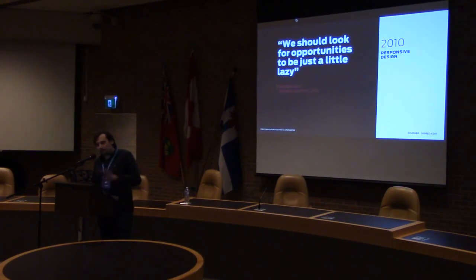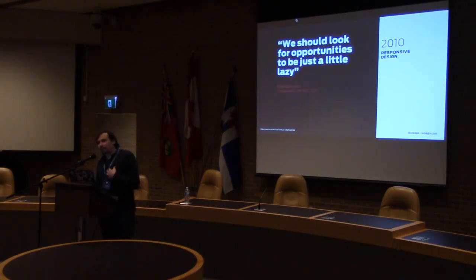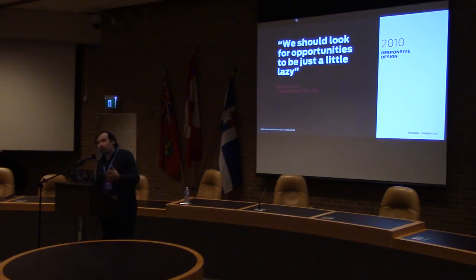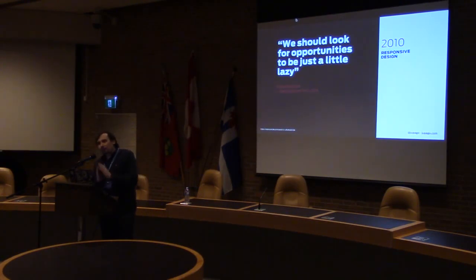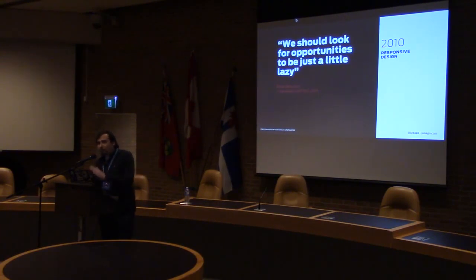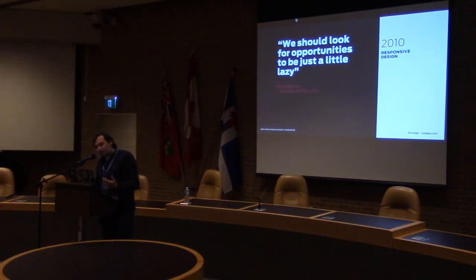But in 2010, this brilliant man called Ethan Marcotte comes around and says: we should be a little lazy. Why are we doing all the math and exact pixels? Why can't we just let the browser do the math? Responsive design — where you don't care if your browser is 782 pixels or 1433, you just do a fluid thing where with some media queries, you decide where to add more columns or change content and let it flow. This was revolutionary again. Everybody got super excited, and we started doing things very differently from that point on.